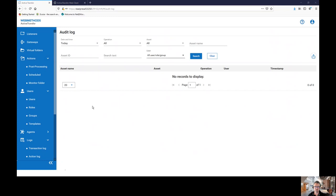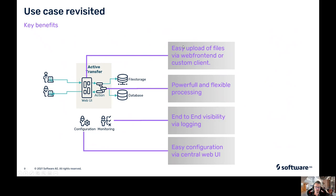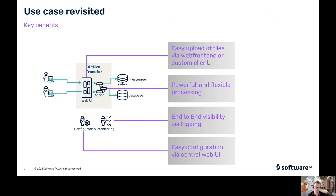Let's wrap this up. We've seen Active Transfer — we've seen how you can easily upload files using the web front end or any custom client supporting the standard protocols. We've seen the powerful and flexible processing you can do with actions — nearly everything you can do with files, in one place, at one location, with one location where you also have the logging and end-to-end visibility of what happened with your file. All of this is easily configurable in the same web interface — the configuration of the actions is just click, drag and drop. Thank you for listening. My name is Martin Problinski and thank you for listening to my short webcast about Active Transfer.